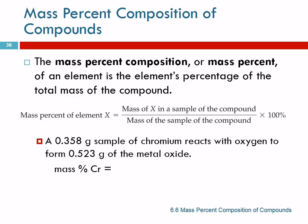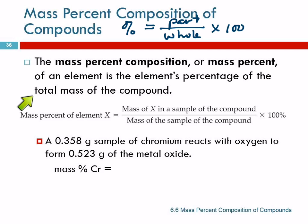Mass percent composition of compounds. It's helpful to remember a generalized definition for percent: percent equals the part you're interested in divided by the whole thing times 100. Mass percent composition, or we often just call it mass percent of an element, is just the element's percentage of the total mass of the compound.